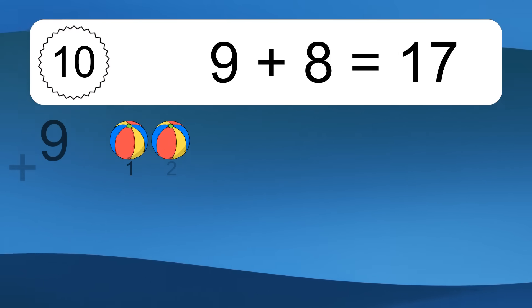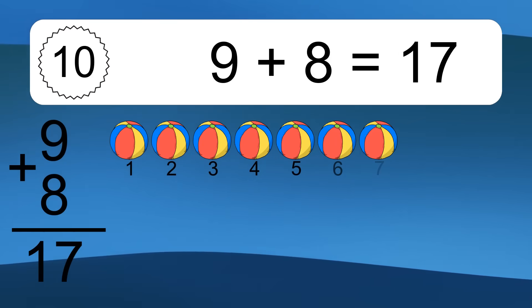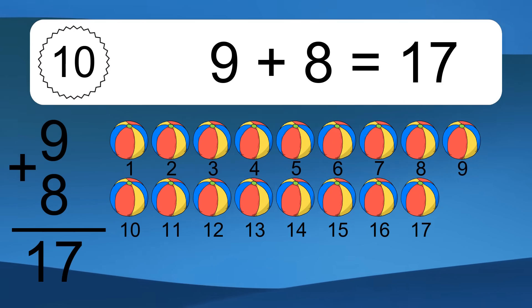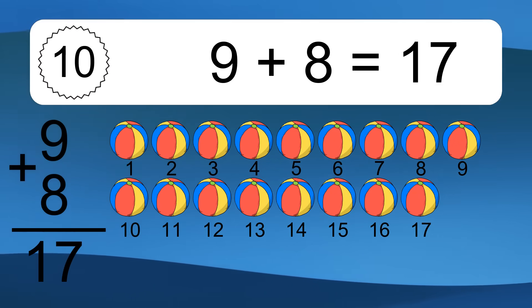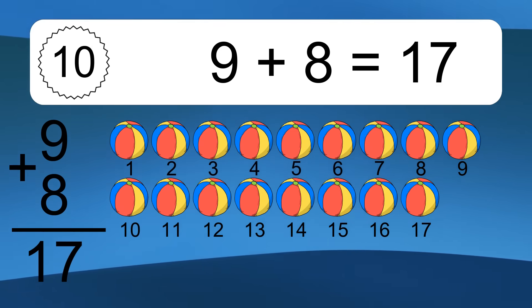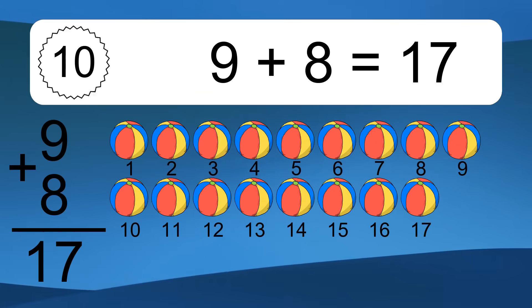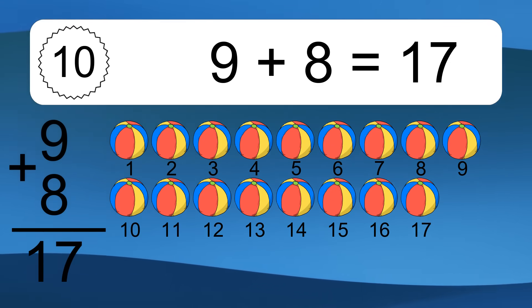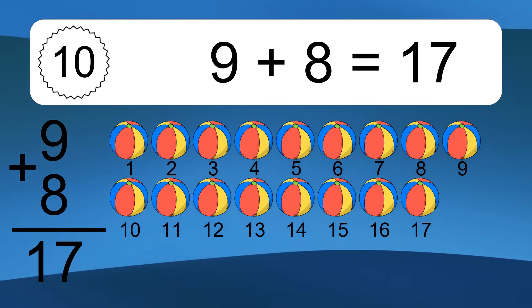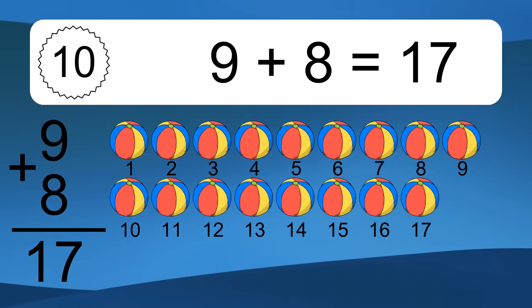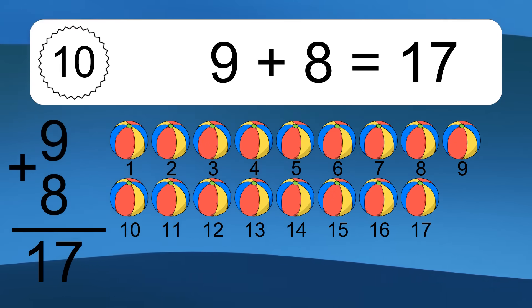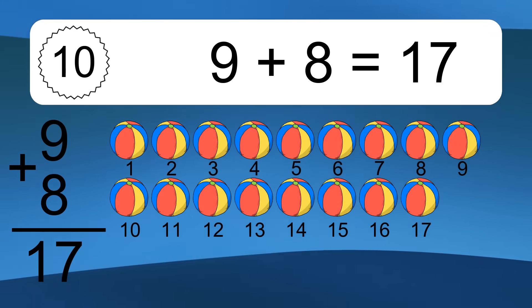9 plus 8 equals what? 9 plus 8 equals 17. Let's count it: 1, 2, 3, 4, 5, 6, 7, 8, 9, 10, 11, 12, 13, 14, 15, 16, 17.